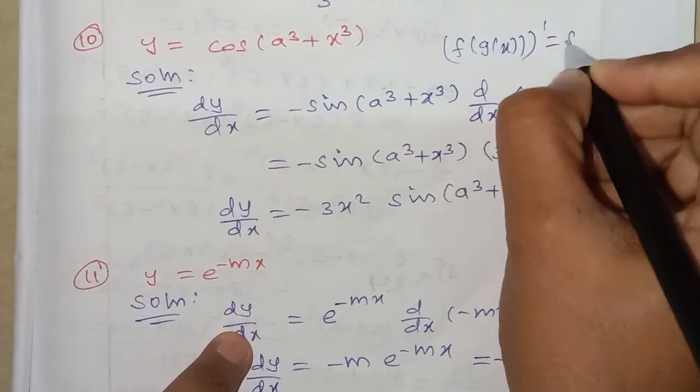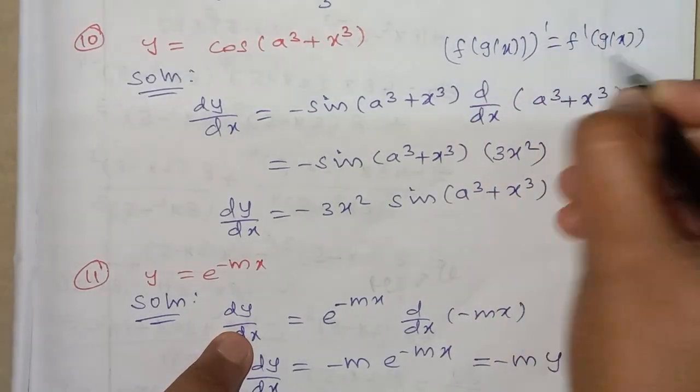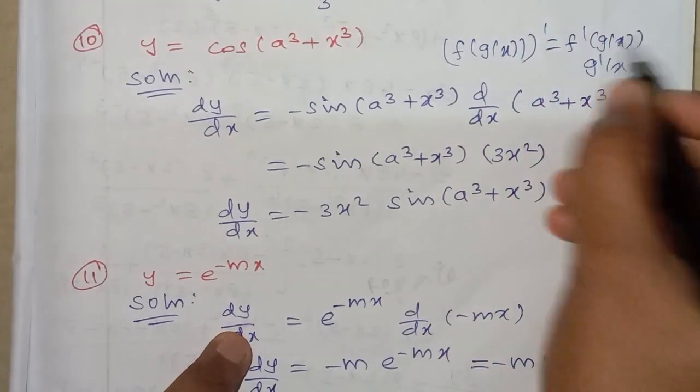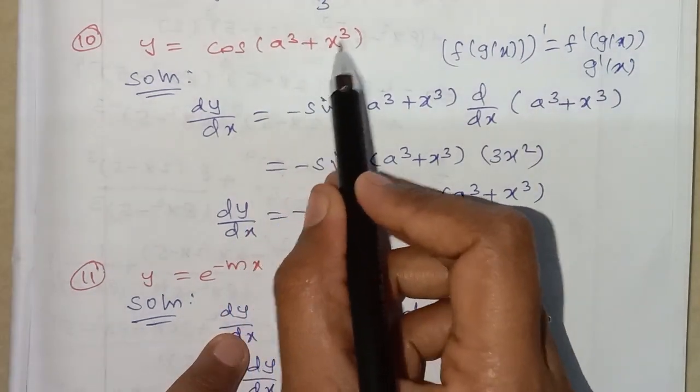If we differentiate a function of g of x: f dash of g of x into g dash of x. This is a cube plus x cube.